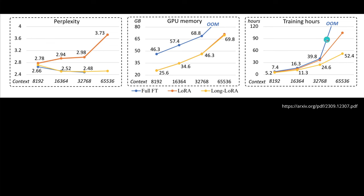So here is the summary. The key components of Long LoRA are: first, shifted short attention (S2 attention), which is similar to the shifted window transformer from visual transformer architectures. Second, since we want to optimize GPU process management with Flash Attention 2, we use a not-too-modified attention mechanism so that S2 attention can run in parallel with Flash Attention 2 on the GPU — a win-win situation. Third, we only need to make two small layer structures trainable: the embedding layer and the normalization layers.